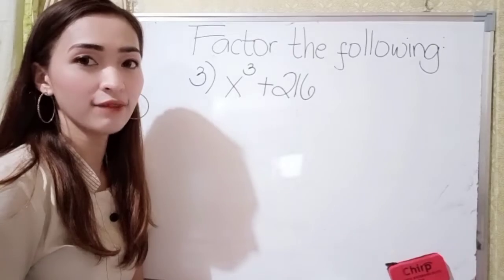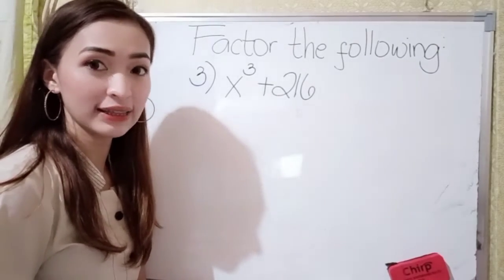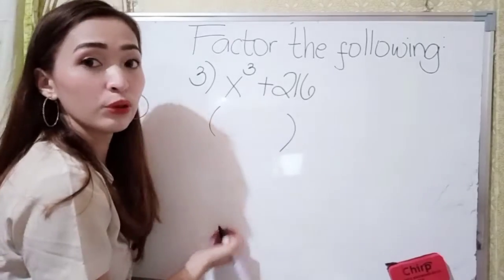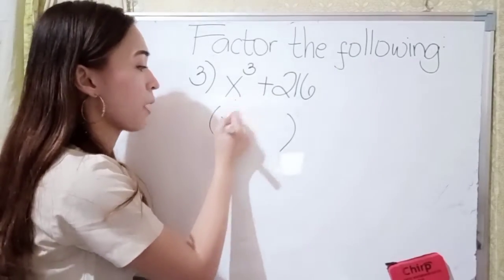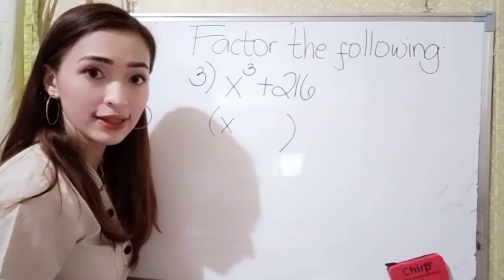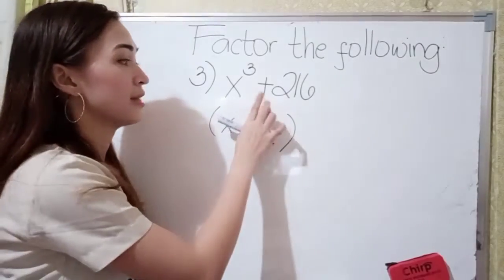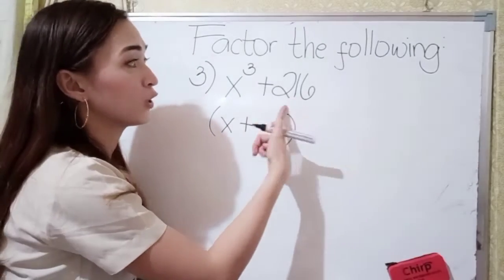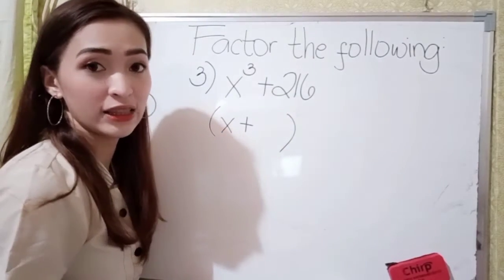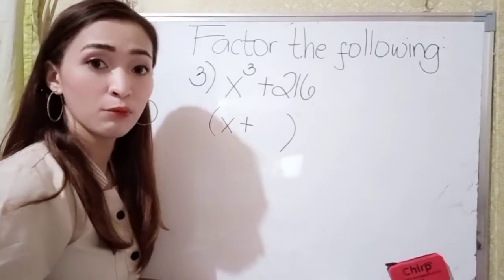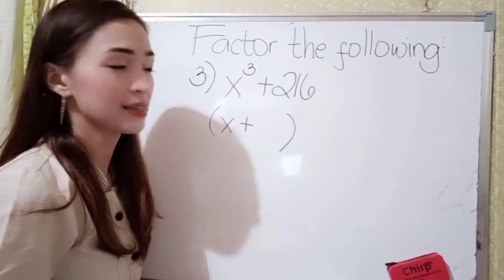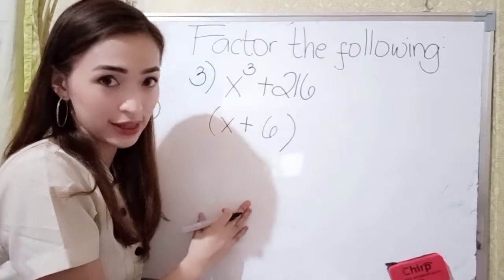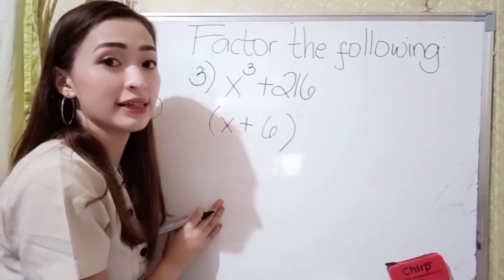For number 3, we have x cubed plus 216. Find the cube root of x cubed — so we have x, because x times x is x squared, times x is x cubed. This is plus, so write plus here. Now, what is the cube root of 216? Think of a number that if you multiply by itself thrice, the answer is 216. So, that is 6, because 6 times 6 is 36, times 6 is 216.